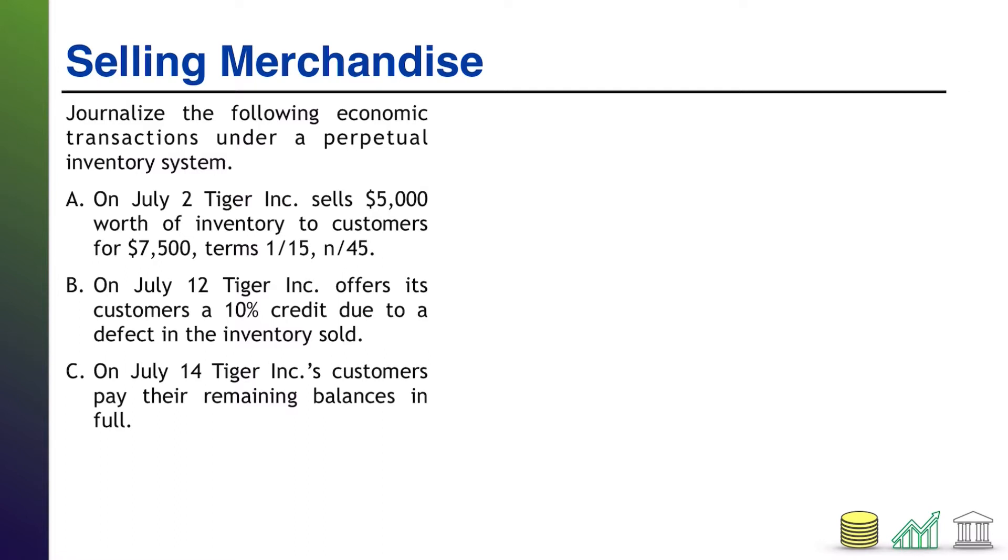Alright, welcome back. Let's get started with A. On July 2nd, Tiger Inc. sells $5,000 worth of inventory to customers for $7,500 and it gives us some terms. So first of all, let's focus on those terms.